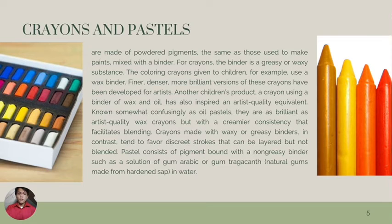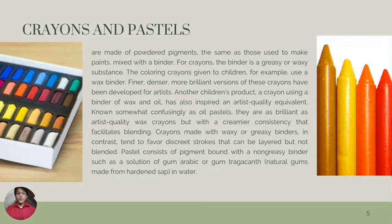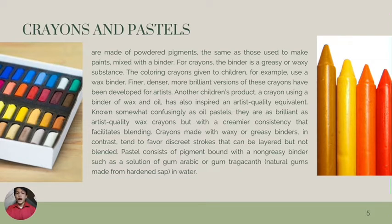Crayons made with waxy or greasy binders tend to favor discrete strokes that can be layered but not blended. Pastels consist of pigments bound with a non-greasy binder, such as a solution of gum arabic or gum tragacanth, a natural gum made from hardened sap in water.